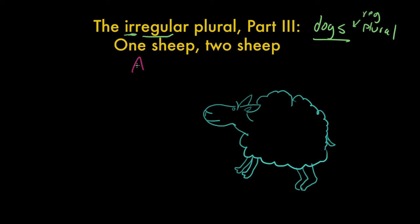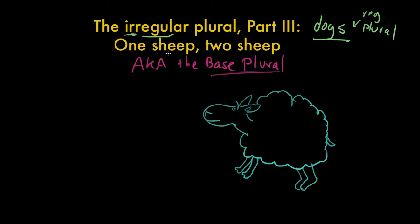Today I figured we'd talk about something called the base plural, which I will illustrate for you using our friend the sheep. Sheep is a very strange word in that it doesn't matter whether or not there's more than one of them. The form of the word always looks the same, whether it's one sheep or two sheep. It's an irregular plural you don't add an S to. This is called a base plural, because the base — the thing that you would normally add the particle S to — doesn't change, whether it's singular, sheep, or plural, sheep.